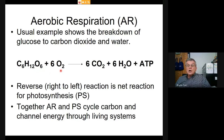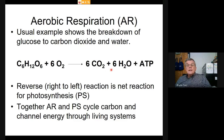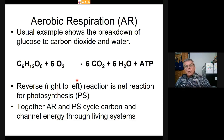Photosynthesis makes the reduced carbon all living things need, and it also generates free oxygen. This reverse reaction is the reason we have such high levels of productivity—we can capture carbon out of the air—and also why we have an oxygen atmosphere. Together there is a flow of carbon, oxygen, CO₂, and energy in the form of sunlight flowing among different life forms.